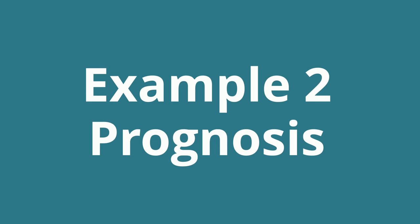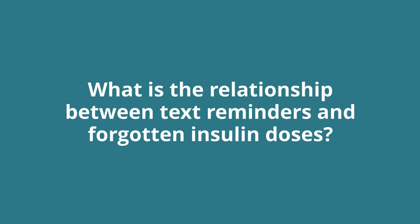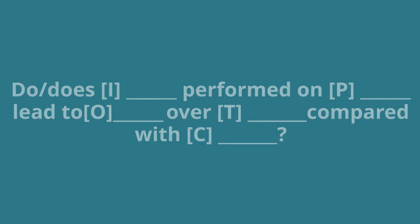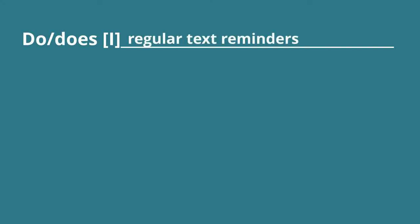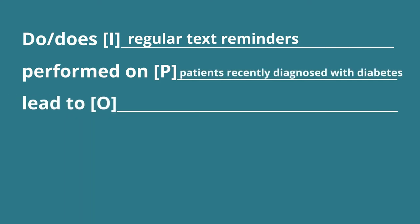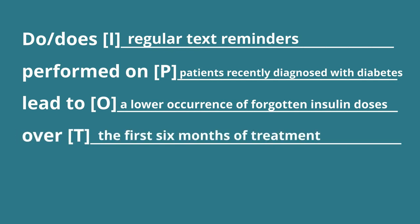Let's look at another example. This time we'll look at a topic for prognosis. My initial question was, what is the relationship between text reminders and forgotten insulin doses? The PICO question format could be: do or does I performed on P lead to O over T compared with C? The intervention or exposure is regular text reminders. The patient population or problem is patients recently diagnosed with diabetes. The outcome I want to know about is a lower occurrence of forgotten insulin doses. The time frame I'll look at is the first six months of treatment, and I'll compare this all against no reminders.